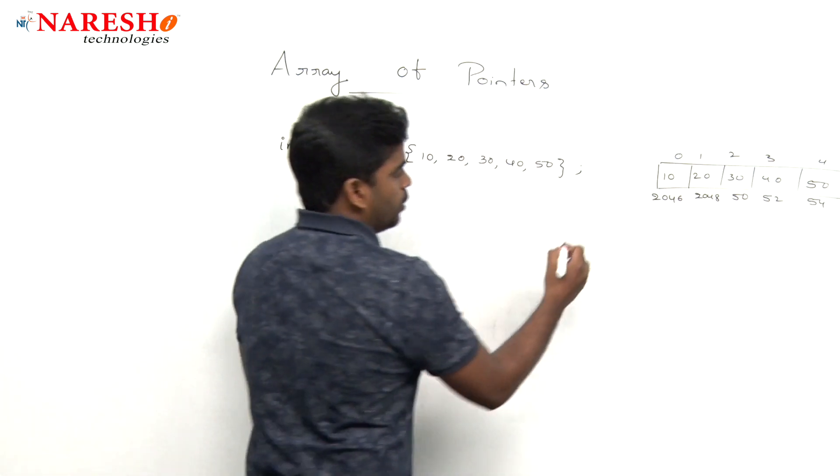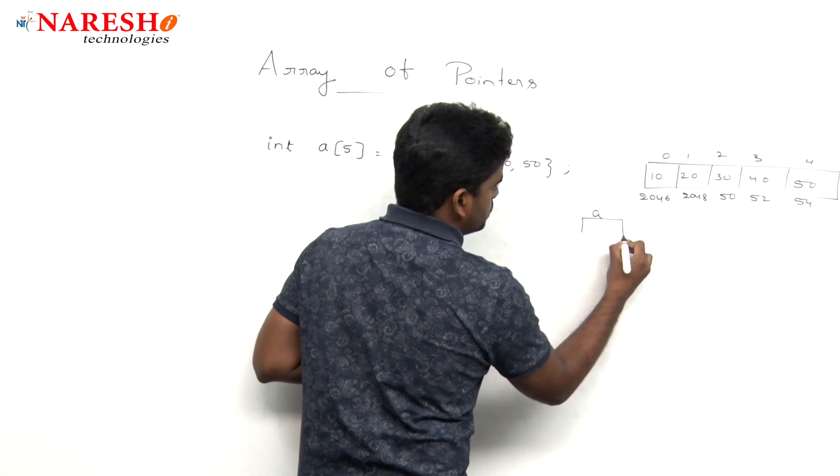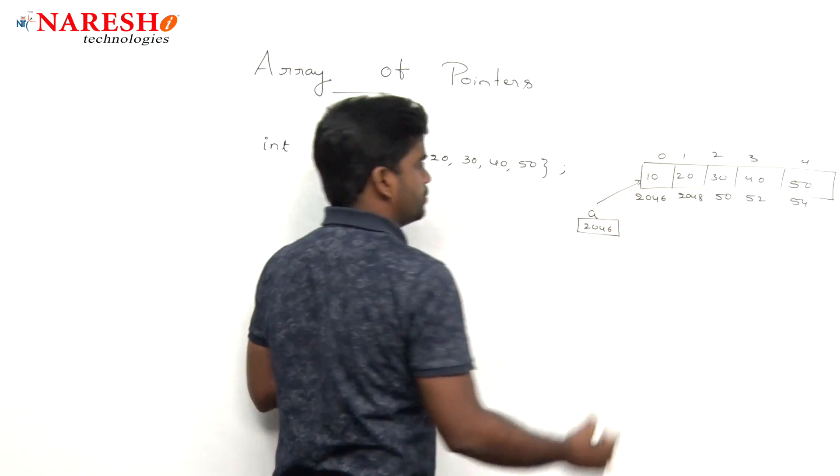2052, and 2054. And we know that array variable always holds the base address, that is 2046. Consider it starts pointing to this one.